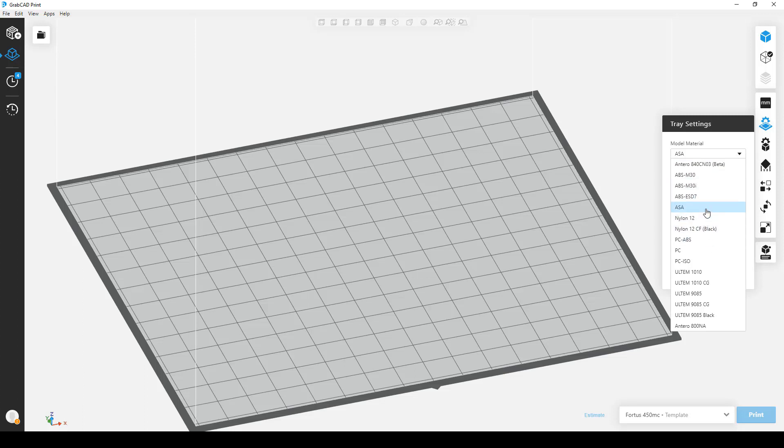And by selecting a given material I would like to run, ASA for example, it then shows me all the material slice combinations with tips that are available for ASA on a 450. From there, it also allows me to see the support material combinations and then the support tip. If I click on this, it'll show you that there's two, the support tips that are required to run the support and model material on a 450MC.